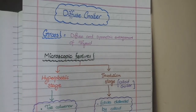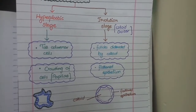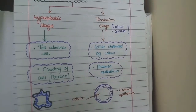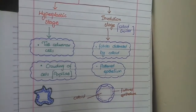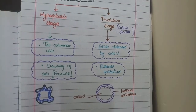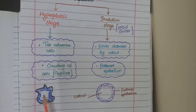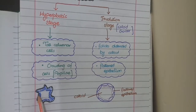On microscopic picture, you see two stages. The first stage is hyperplastic stage and the other stage is involution stage. In hyperplastic stage, the picture will be like that of Graves' disease, in which there is increase in size of cells from cuboidal to columnar and increase in number of cells, which causes crowding of cells with formation of papilla. So in hyperplastic stage, you see increase in height of cells to columnar cells and crowding of cells with papilla formation.